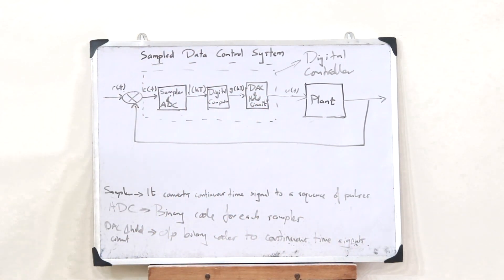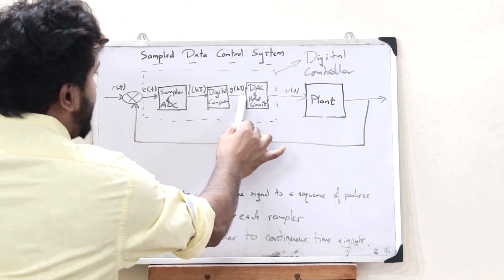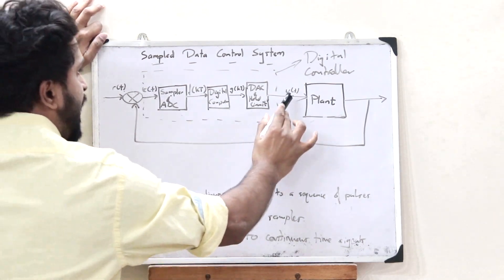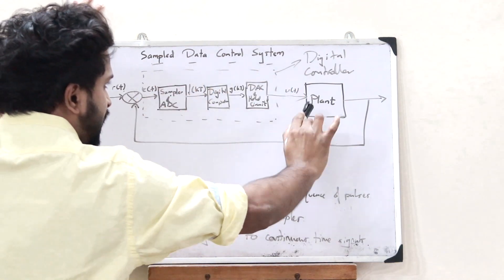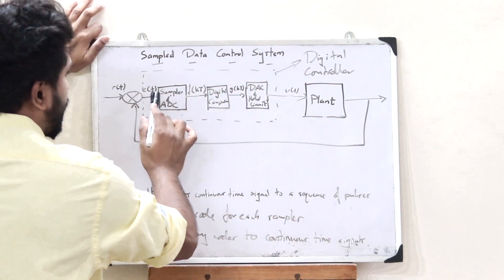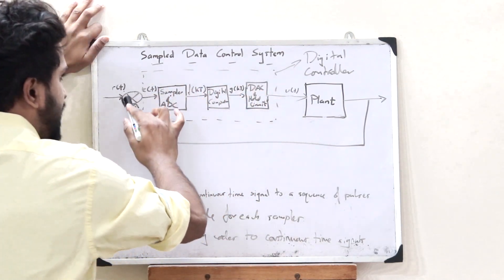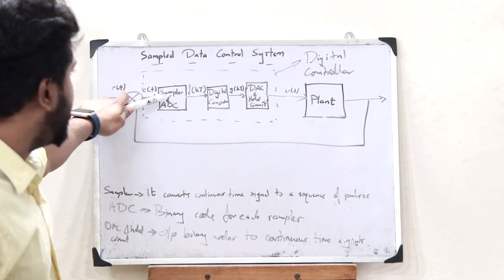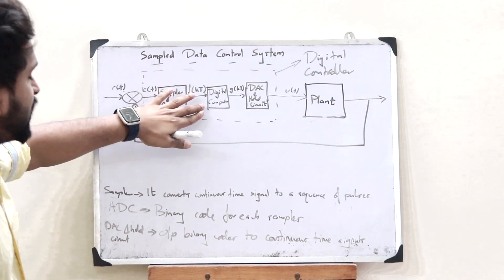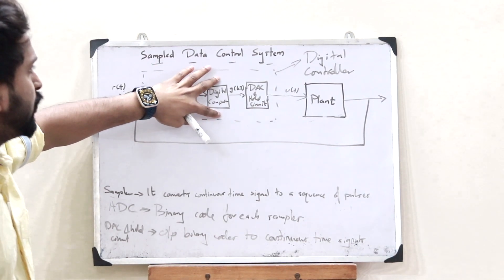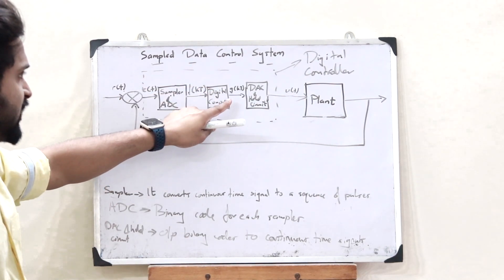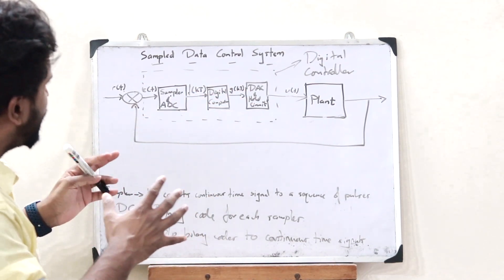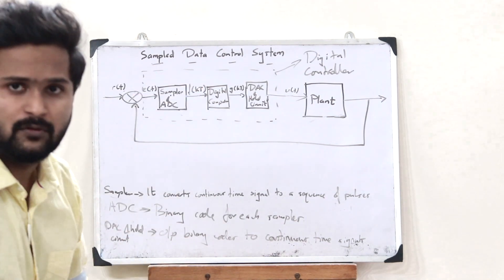The input and output of this digital computer are digital signals, whereas the error signal and the output of the whole digital controller are analog signals. So the input and output of the entire digital controller are analog signals. A sampler and ADC convert the analog signal to a digital signal for the digital computer, and a DAC and hold circuit convert the digital signal back to an analog signal. This is the basic circuit diagram of a sampled data control system.